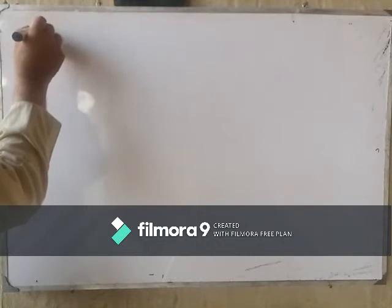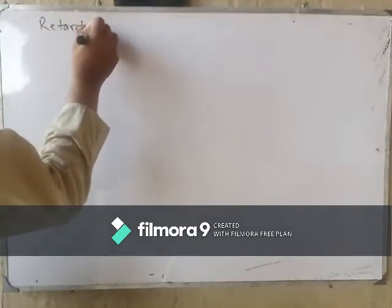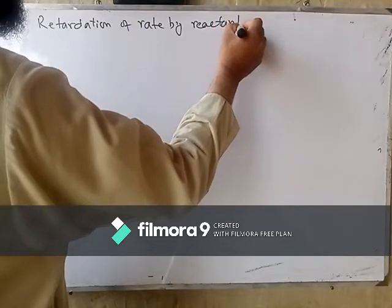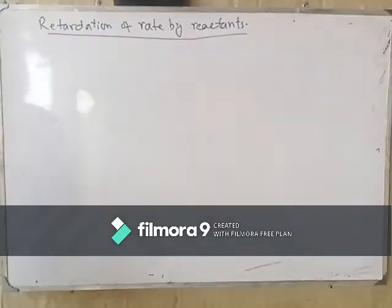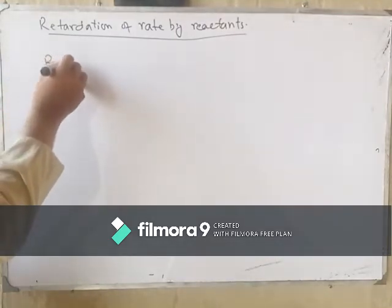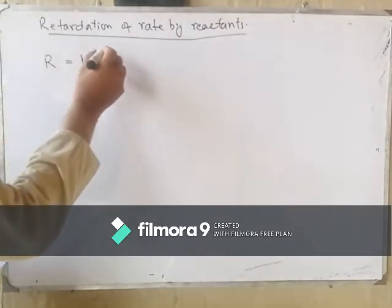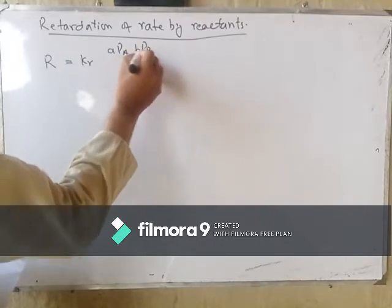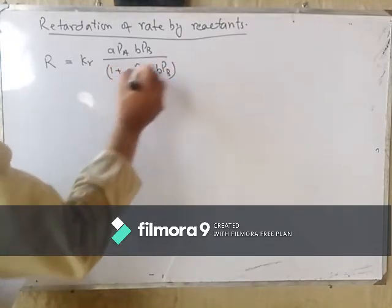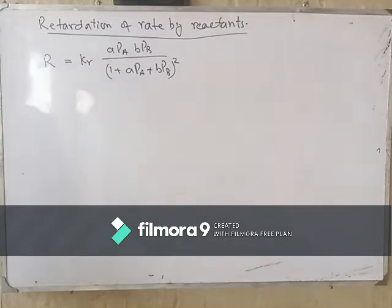We have started the retardation of rate by reactant, which we were discussing last time. The rate of reactions for surface catalyzed reactions is equal to KR·KA·PA·KB·PB divided by (1 + KA·PA + KB·PB) squared, as we discussed earlier.